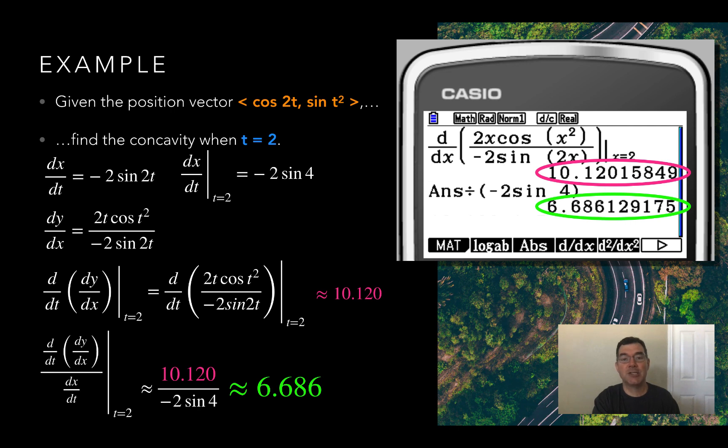Alright, so that is slope of a tangent line and concavity. That's our last unit on parametric equations. If you have any questions, please let me know, and I will see you tomorrow.